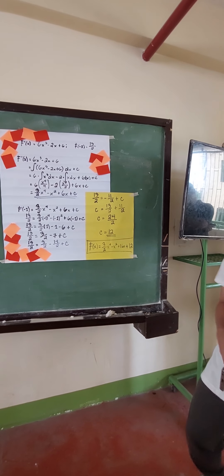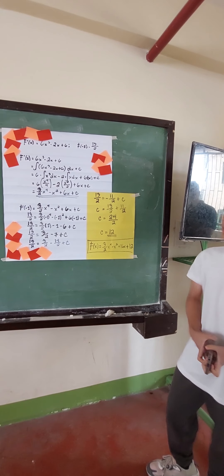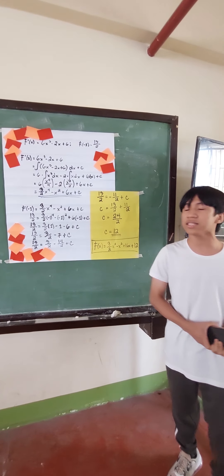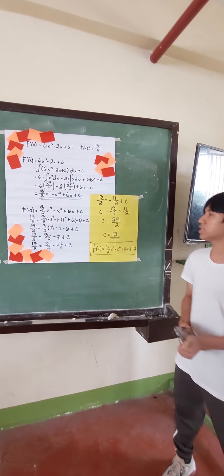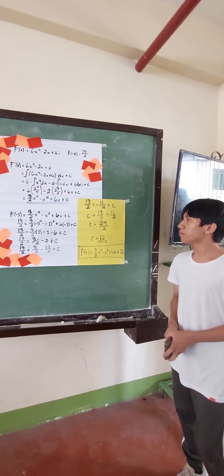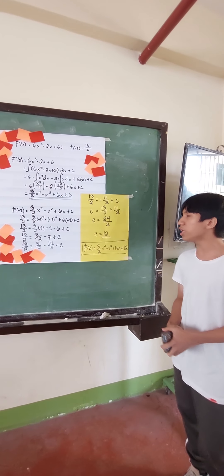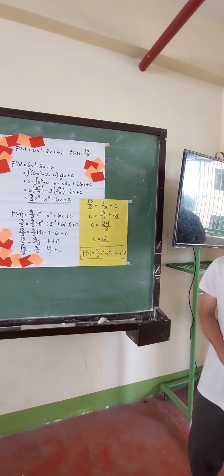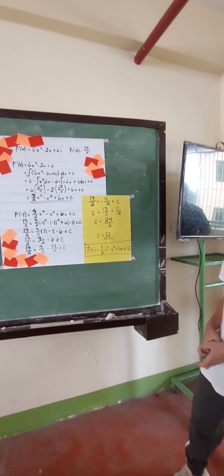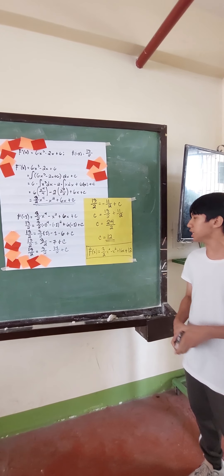Transposing, c is equal to 13 over 2 plus 11 over 2, which gives 24 over 2. So the value of c is equal to 12. Therefore f of x equals 3 over 2 x to the 4th minus x squared plus 6x plus 12.